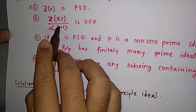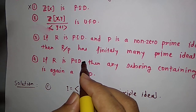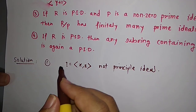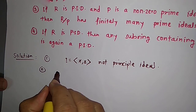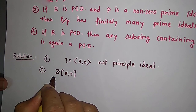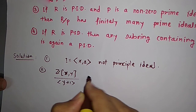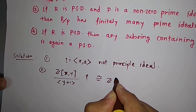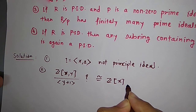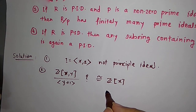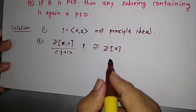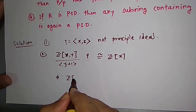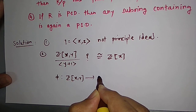Now let us check whether the second option is correct. We need to find out if Z[x,y] modulo the ideal generated by y+1 is a UFD — that is, a unique factorization domain. I will show that this quotient ring is actually isomorphic to Z[x] itself. Let us define a homomorphism from Z[x,y] to Z[x].